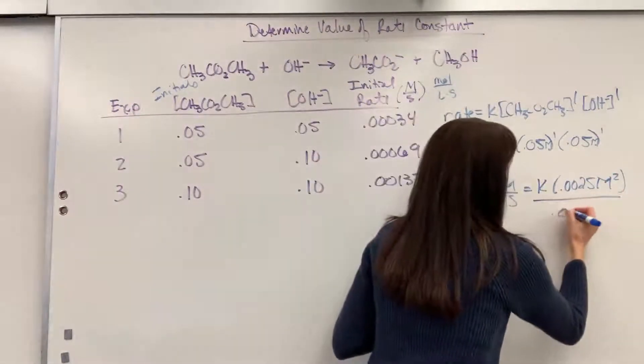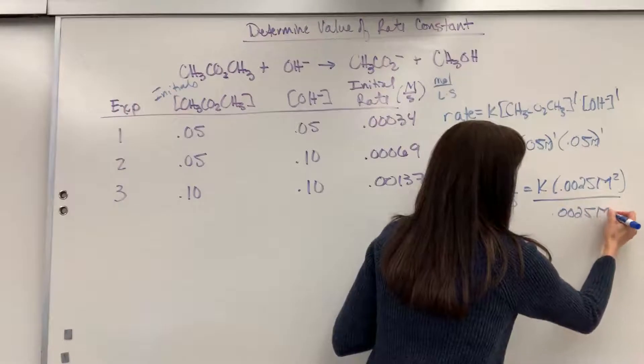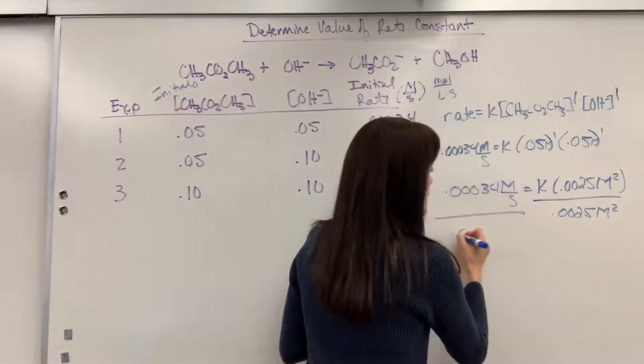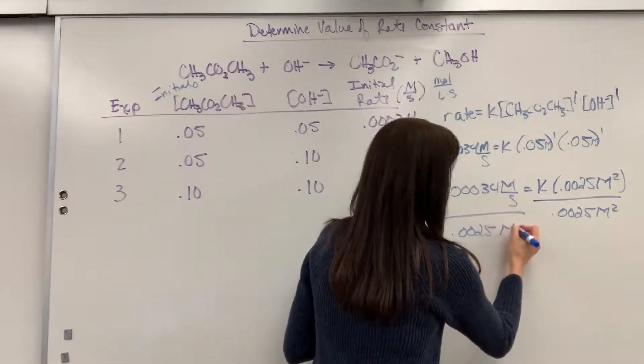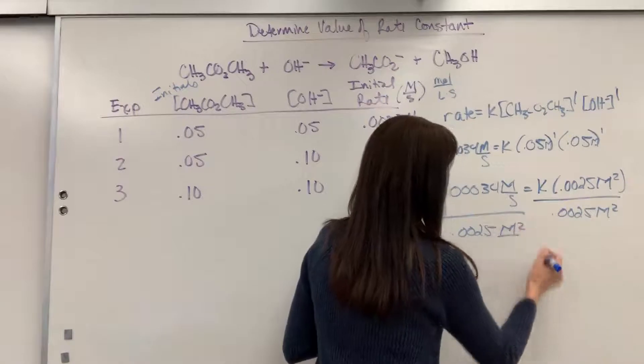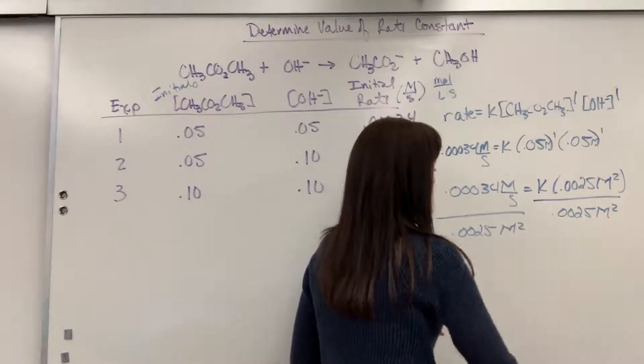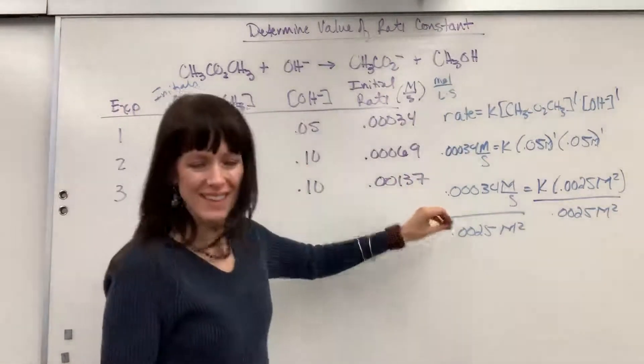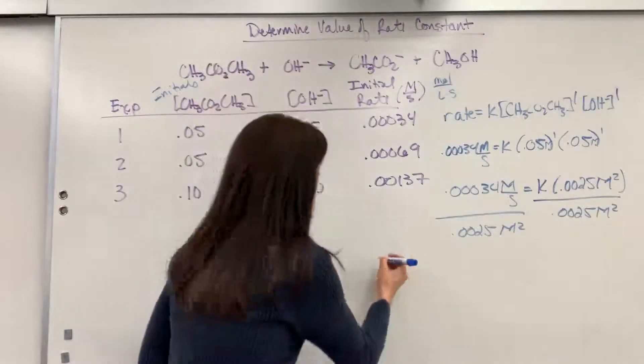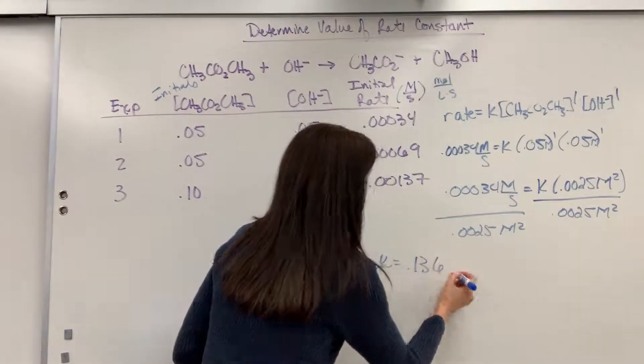Now if we divide both sides by 0.0025 molarity squared, when we divide this, we are going to get K equals 0.136.